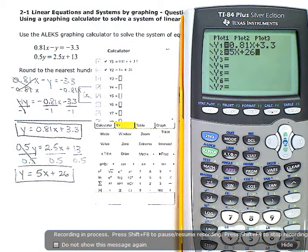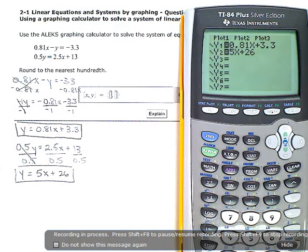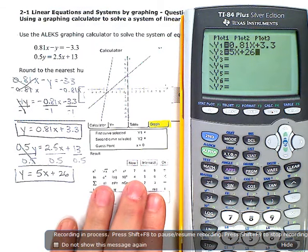So in either calculator, the one in the ALEKS software looks like this. Texas Instruments calculators looks like that. The next thing that you're going to do is hit the graph button,